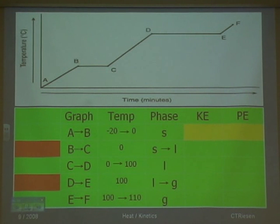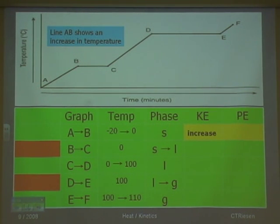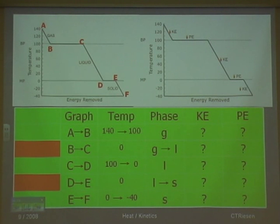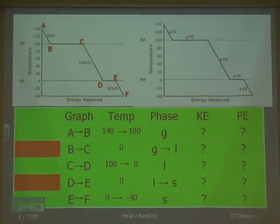Looking at the chart overall we can compare the energies involved. For instance, from line AB, the temperature increases from negative 20 to zero — that is kinetic energy — and potential energy does exist but it doesn't change. We can do the exact same thing in reverse: going from gas to liquid to solid. The kinetic energy is where temperature changes; the potential energies are where temperature does not change. The upper potential energy at 100 degrees is the heat of vaporization; the lower potential energy at zero degrees is the heat of fusion. Either direction, we can see how energy flows.